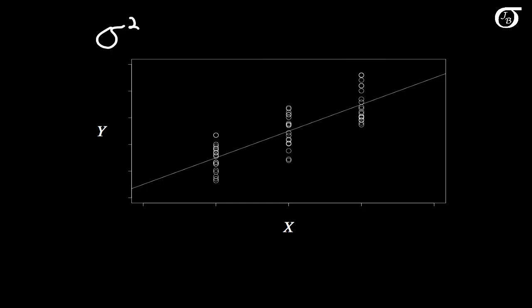Our simple linear regression model assumes that the true variance of y at any given value of x, and the true variance of y here, and the true variance of y here, and the true variance of y here, are all equal. Our simple linear regression model assumes that the variance of y is the same at every value of x, and that variance is equal to sigma squared.